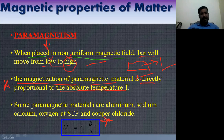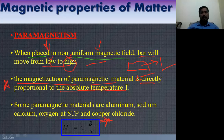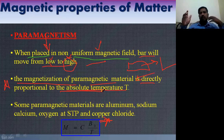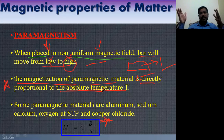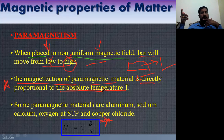Curie's law explains paramagnetism: when you place paramagnetic material in a uniform magnetic field, the bar moves from low to high. The magnetization is directly proportional to temperature, meaning as you increase temperature, dipoles align in a particular direction, but beyond a certain temperature they go randomly — that temperature is called the Curie temperature, where ferromagnetic material turns into paramagnetic material. Examples of paramagnetic materials: aluminum, sodium, calcium, oxygen, copper chloride.